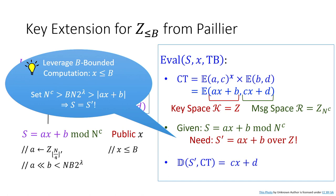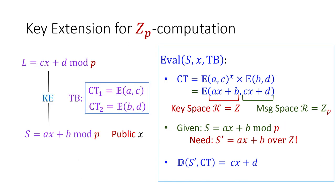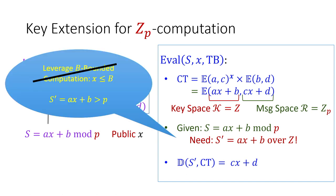After solving this issue, we obtain a key extension gadget for bounded integers using Paillier. For Z_p computation, we have the same issue but it's much more challenging because we don't have an assumption on the boundedness of value x. The key ax + b is very likely to be larger than the message modulus p, and solving this issue requires more involved techniques described in our paper.